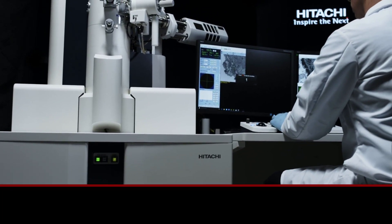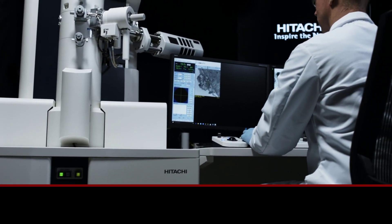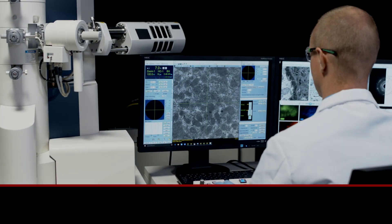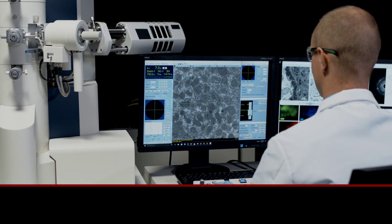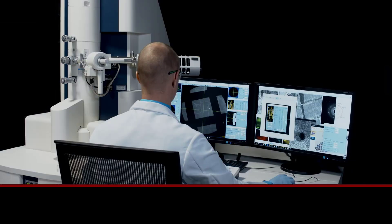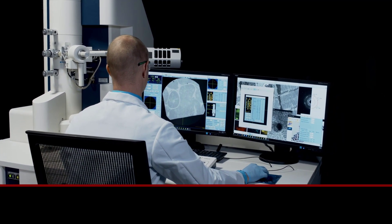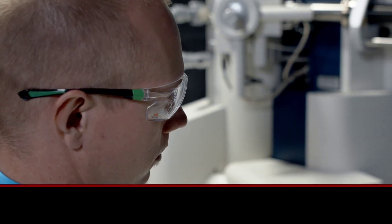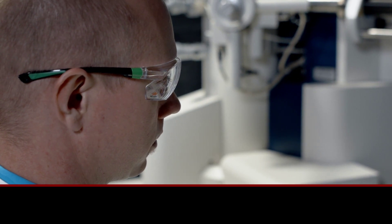With ergonomics and efficiency in mind, operating in a dark room is a thing of the past. The innovative design layout of the HT7800 not only improves posture and safety by locating the operator in front of the workstation versus the electron column, but also reduces eye strain by keeping the room lights on.